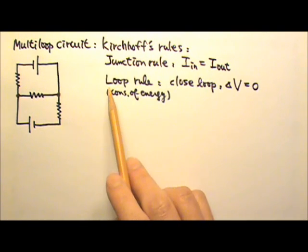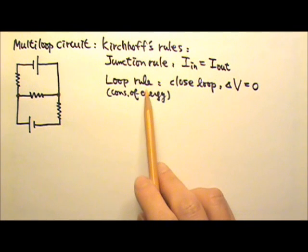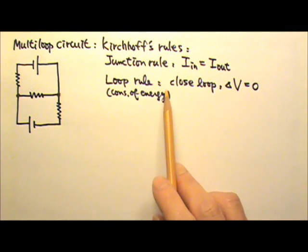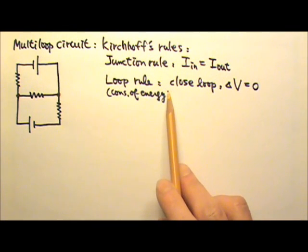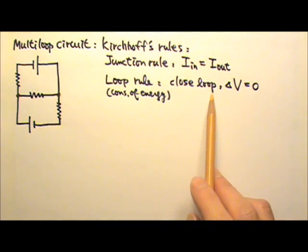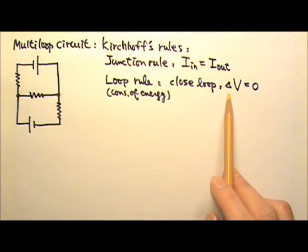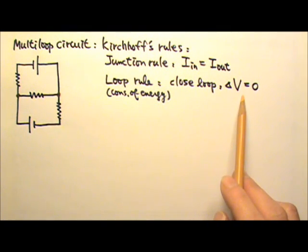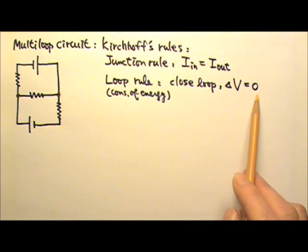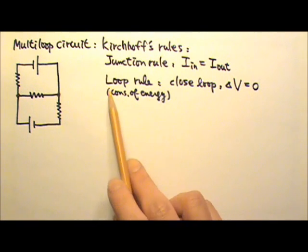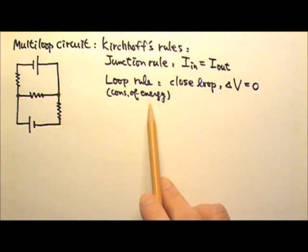The second of Kirchhoff's rules is the loop rule. The loop rule says that if we go around any closed loop in a circuit, the change in electric potential, delta V, must be zero. The loop rule is related to the conservation of energy.